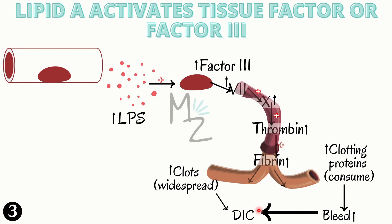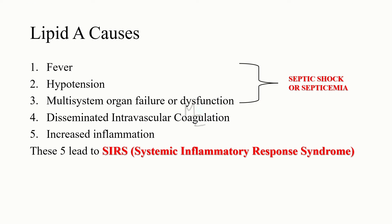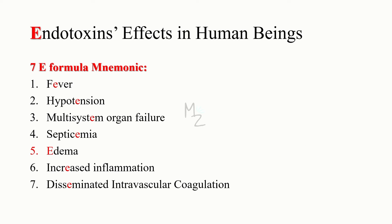In a nutshell, lipid A causes: fever, hypotension, multi-system organ failure or dysfunction leading to septic shock or septicemia, disseminated intravascular coagulation, and increased inflammation. These five lead to SIRS — systemic inflammatory response syndrome. To memorize endotoxin effects, I have a seven-E formula mnemonic: every word starts with the letter E — fever, hypotension, multi-system organ failure, septicemia, edema, increased inflammation, and disseminated intravascular coagulation.